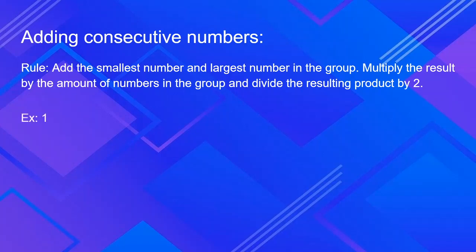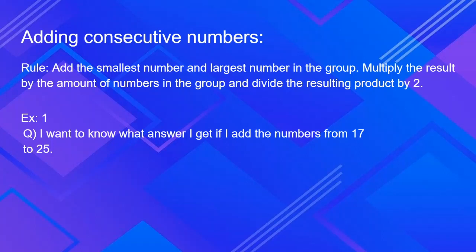So let's get to our example. My question is: what answer do I get if I add the numbers from 17 to 25? As per the rule, first I add the smallest number and the largest number in the group. So that would be 17 plus 25 which equals 42.